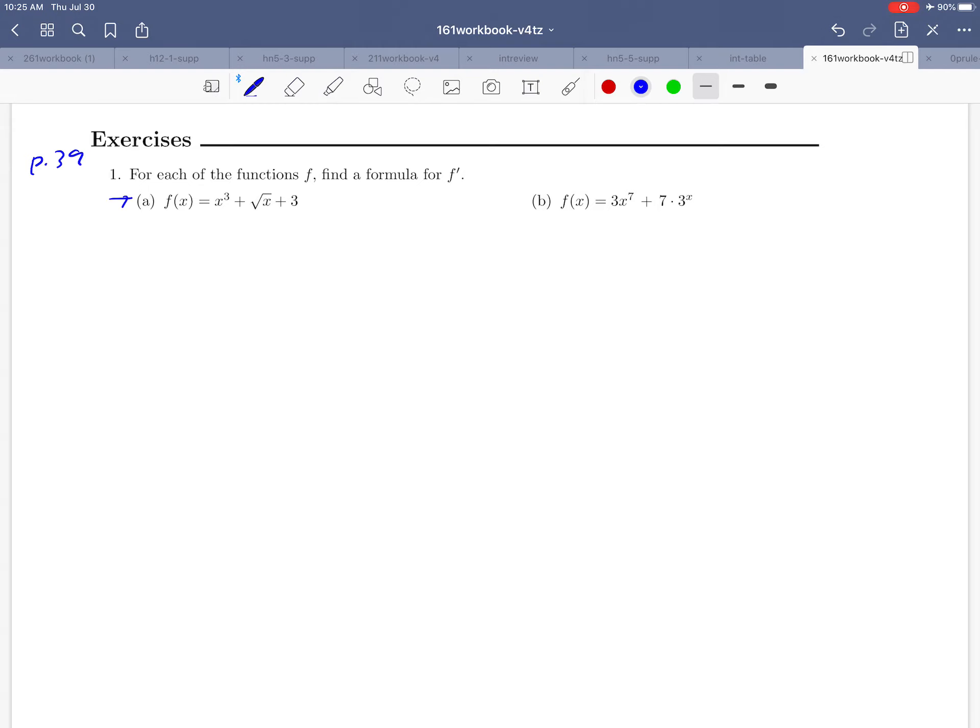Let's start with part a here. The function they give us is f(x) equals x cubed plus the square root of x plus 3. We might start by just rewriting this function a little bit. The square root of x can be rewritten as x to the one-half power. That's a form that makes it a little bit easier to figure out what derivative rule we want to use, plus 3. And so what would the derivative of this be?